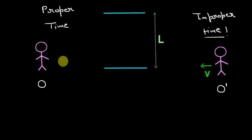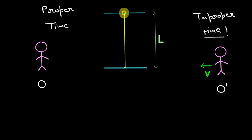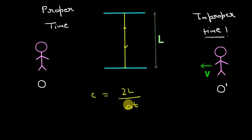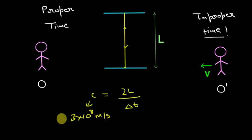Now let's look at these mirrors from observer O. There is a flash of light which shoots a ray upward, and the ray goes up and then comes back down. So the speed of light c for this observer is simply the distance 2L divided by the time taken by light, which is delta t. This delta t is the proper time — always remember that. The speed of light c equals 3 × 10⁸ meters per second and is a constant.